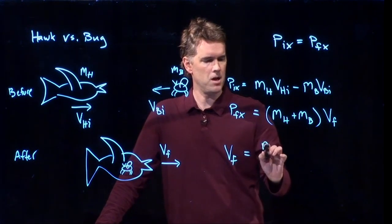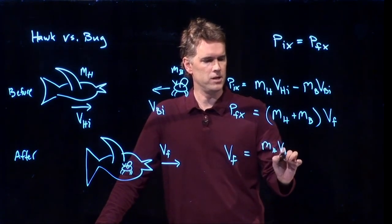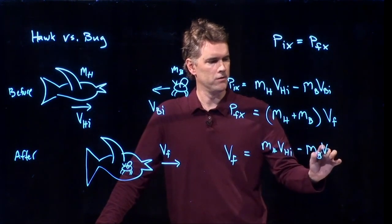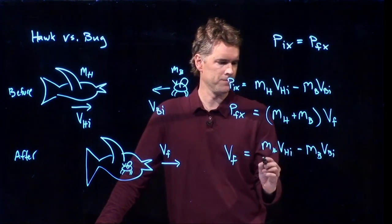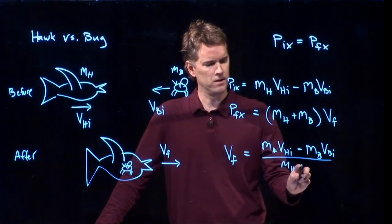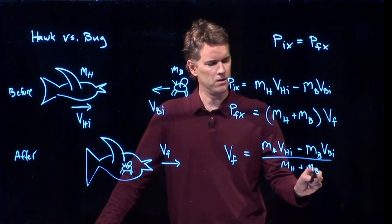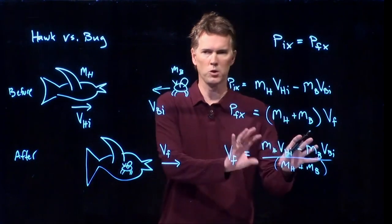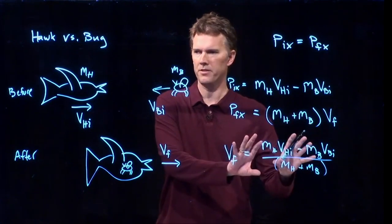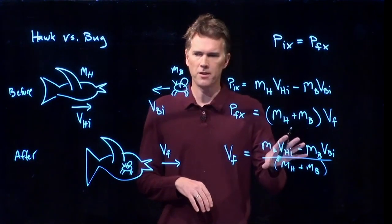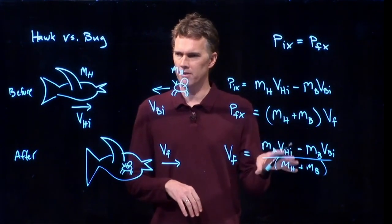Vf is equal to mass of the hawk times v of the hawk, minus mass of the bug times v of the bug, all divided by mass of the hawk plus the mass of the bug. That's what your solution looks like with all the variables still intact. And again, it's nice to hang on to the variables just to make sure it makes sense.